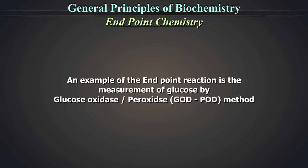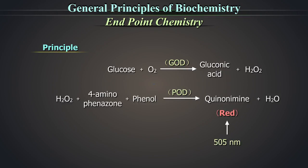An example of the endpoint reaction is the measurement of glucose by glucose oxidase or peroxidase, GOD-POD method. Glucose is oxidized into a red colored compound. The intensity of the red colored compound is proportional to the glucose concentration and is measured at 505 nm, which is 490 to 530 nm.